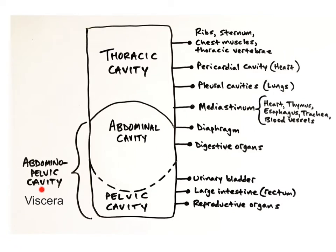The abdominopelvic cavity extends from the diaphragm down to the groin and consists of the superior abdominal cavity and the inferior pelvic cavity. The abdominal cavity contains the digestive organs, including the stomach, spleen, liver, gallbladder, small intestine, and most of the large intestine. The pelvic cavity contains the urinary bladder, some of the large intestine including the rectum, and the internal reproductive organs.